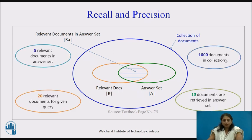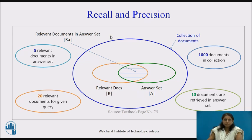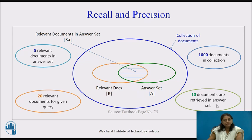Consider this example. Assume we have 1000 documents in the collection. For a given information request there are 20 relevant documents. Out of these 20 relevant documents, 5 relevant documents are obtained in the answer set, and the answer set contains 10 documents total.